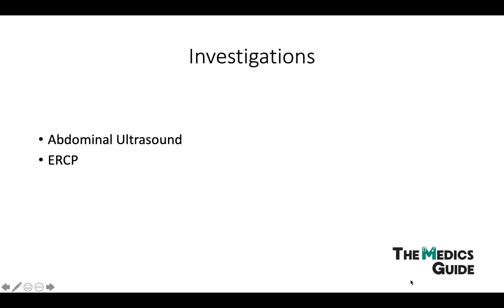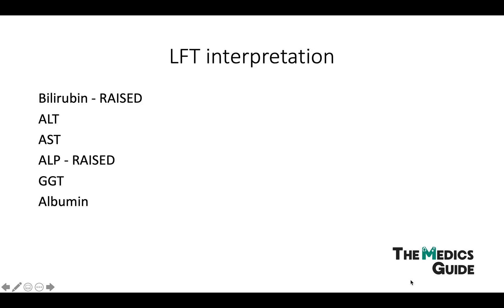Things like features of malignancy can also be identified. Mirizzi's syndrome is associated with an increased risk of cholangiocarcinoma, as recent studies have shown. In terms of routine bloods, the most obvious finding will be on the liver function test, which will be abnormal. You'll often see a very raised ALP and bilirubin in over 90% of patients, and this pattern of results also indicates an obstructive jaundice.